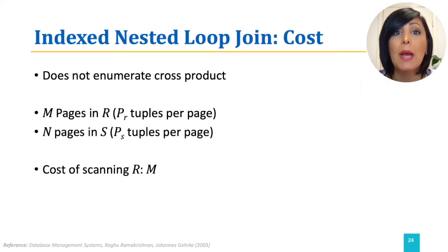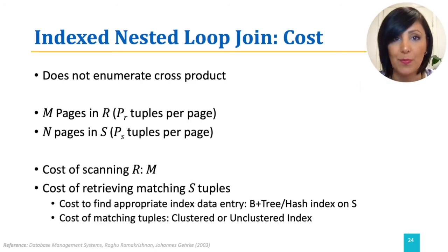Cost of retrieving matching tuples from S depends on the type of index available. If the index is B plus tree index, the cost to find the appropriate leaf is on average 2 to 4 I/O operations.